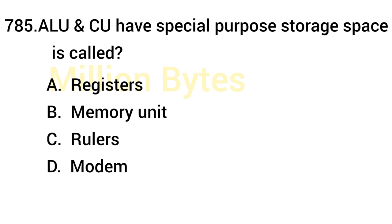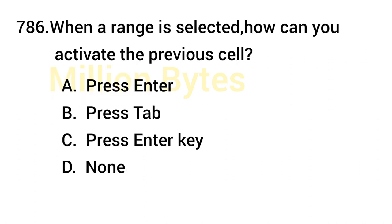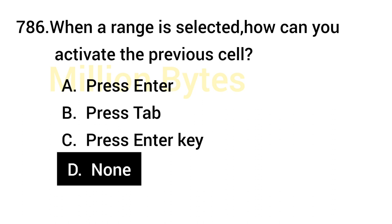ALU and CU have special purpose storage space called Registers. When a range is selected, to activate the previous cell, press Shift + Tab.